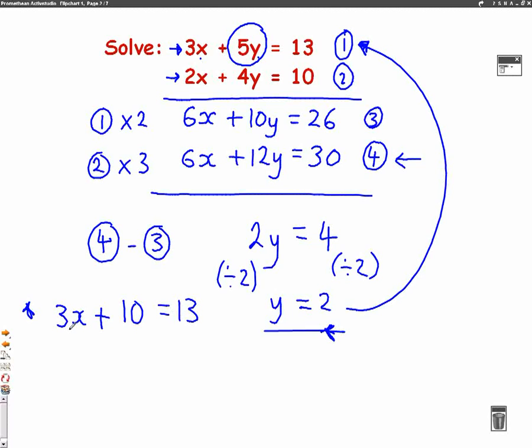And then we need to find what x is. So we're going to take away the 10 from both sides, like we do in solving equations. So we've got 3x equals 3. And then we're going to divide both sides by this 3 here. So x equals 3 divided by 3, which is 1.